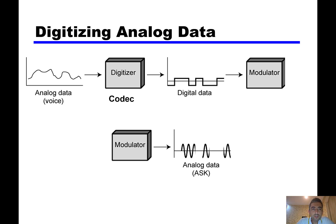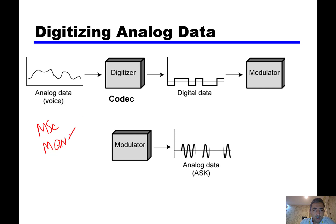Hello everyone and welcome to episode 5 of the mobile network overview course. In episode 4 we discussed MSC, media gateway, and its functions - everything about media, announcements, and three main functions: transcoder, echo cancellation, and call conference. I said I would go through the details of the transcoder in this episode.